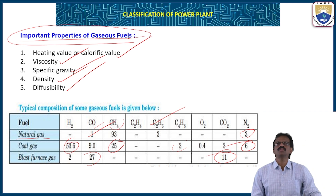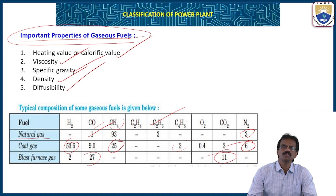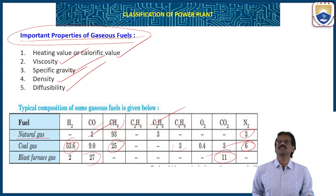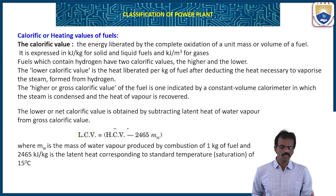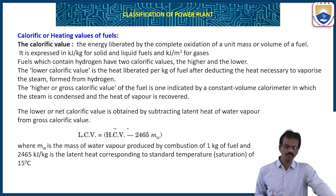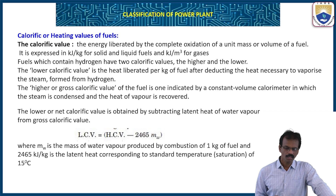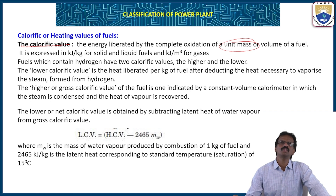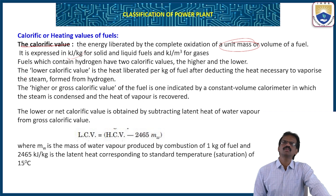These are the details about gaseous fuels. We have now covered solid fuels, liquid fuels, and gaseous fuels — their advantages and properties. Next we will see the remaining sources of energy other than fuels. Before that, we will look at calorific values — how to find them. Calorific value is the energy liberated by complete oxidation of a unit mass or volume of fuel, expressed in kJ/kg for solids and kJ/m³ for gases.